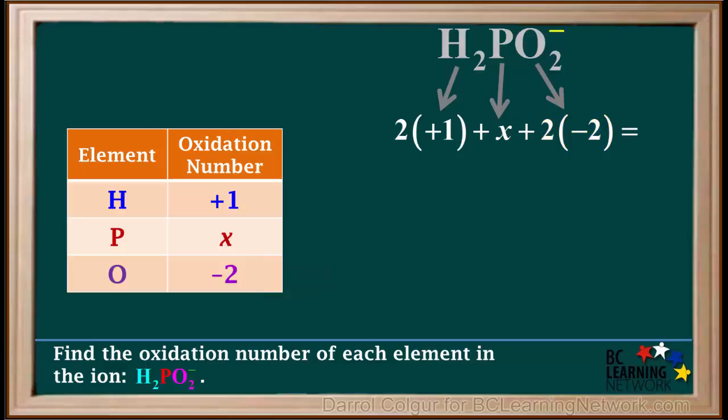The net charge on this ion, shown on the top right of the formula, is minus 1. So, the charges on all the atoms add up to negative 1.